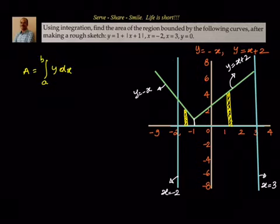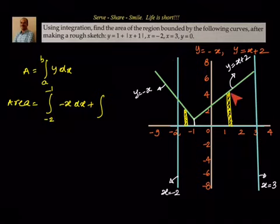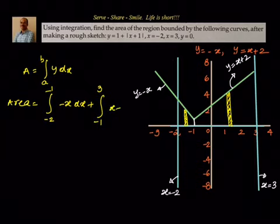The area enclosed equals: from x equals minus 2 to minus 1, where y is given by minus x, we integrate minus x dx; then from x equals minus 1 to x equals 3, the vertical strip height is given by y equals x plus 2 minus 0, so we integrate x plus 2 dx. So the total area is the integral from minus 2 to minus 1 of minus x dx plus the integral from minus 1 to 3 of x plus 2 dx.